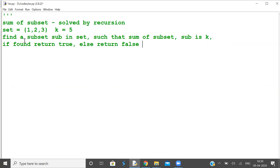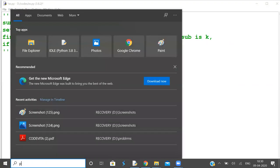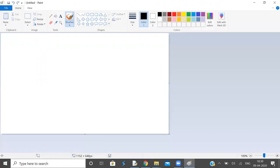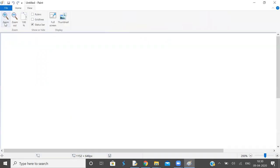I'll demonstrate this with the help of a binary tree. Let us go to the paint application and see the demonstration. The set consists of three elements: 1, 2, 3, and k is given as 5.